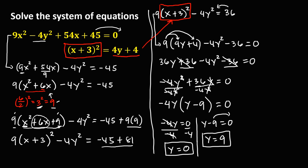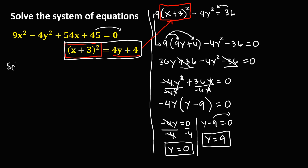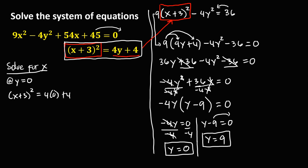Now to solve for x, we use the equation (x plus 3) squared equals 4y plus 4. Starting with y equals 0: we have (x plus 3) squared equals 4 times 0 plus 4. Simplifying, this is x plus 3 squared equals 4. Taking the square root of both sides cancels the square, giving x plus 3 equals positive or negative 2.